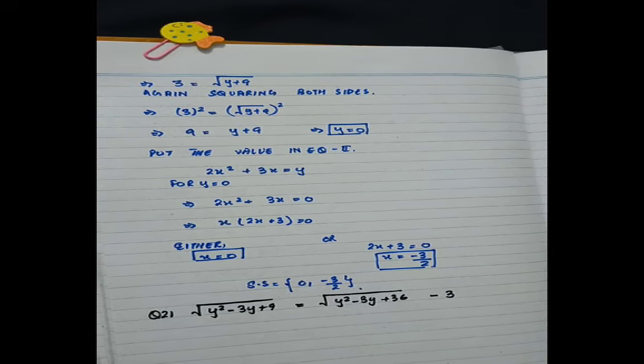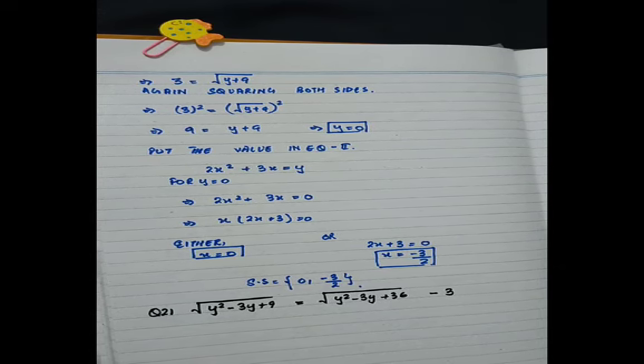Question number 21 is √(y²-3y+9) = √(y²-3y+36) - 3.